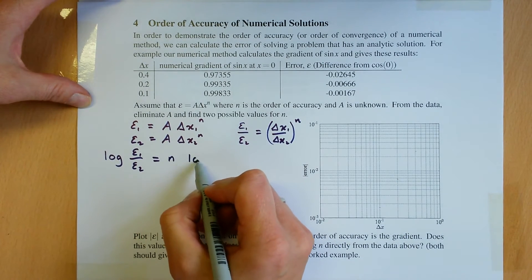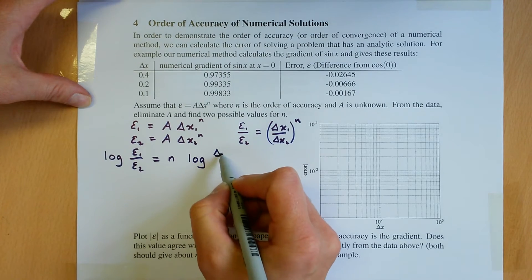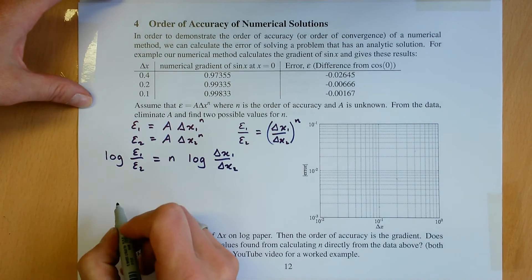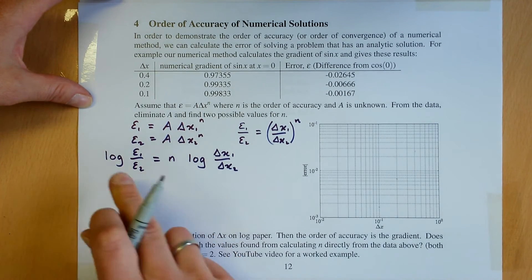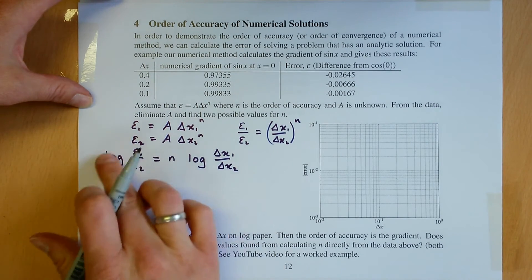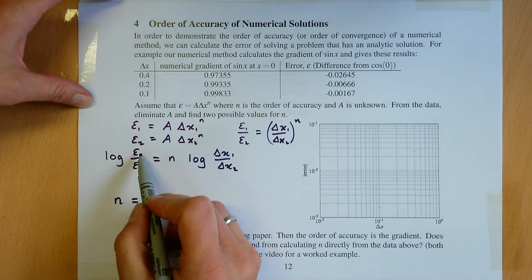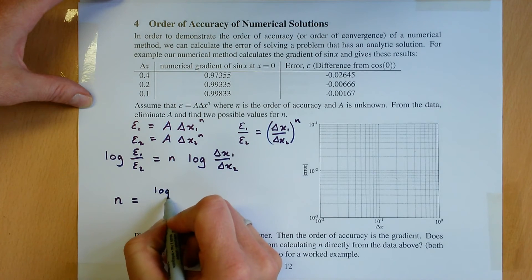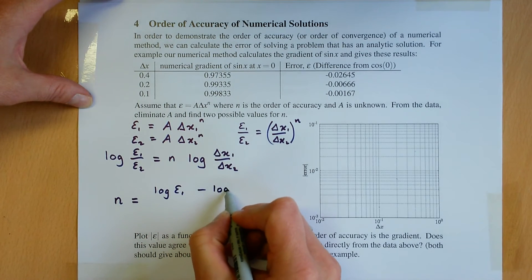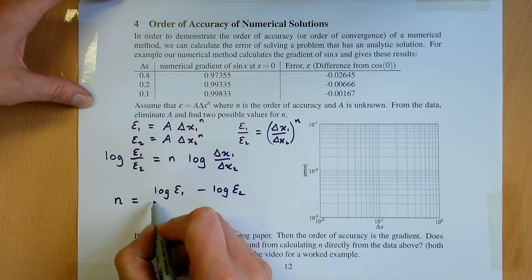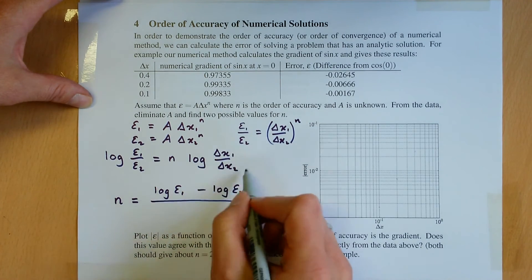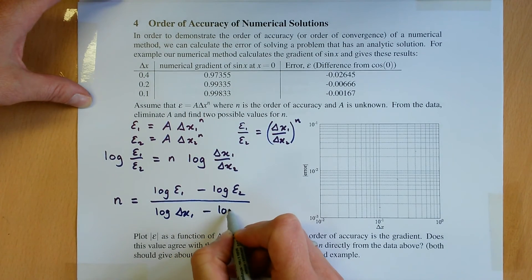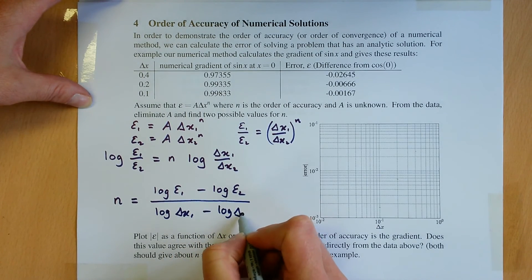I'm now going to rearrange it to find n, so n is going to be equal to that divided by that. I'm also going to rearrange this. Log of epsilon 1 divided by epsilon 2 is equal to the log of epsilon 1 minus the log of epsilon 2, divided by this part, log of delta x1 minus log of delta x2.